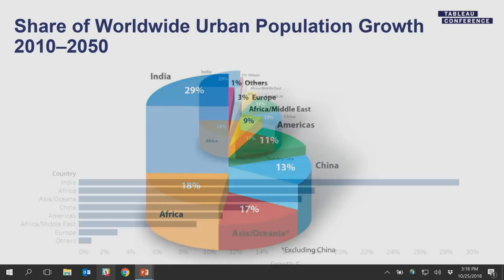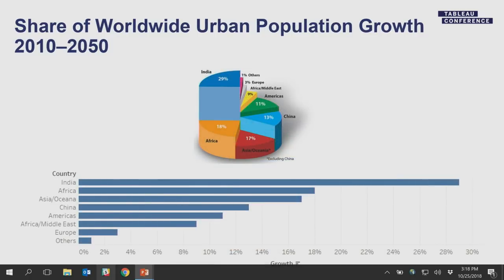One of the things you'll hear throughout this presentation is that the bar chart is your friend in many cases when you want to make comparisons. Here you can quickly see, for example, that India is about twice as much as China in terms of growth. And it's sorted, so you can easily make those comparisons.